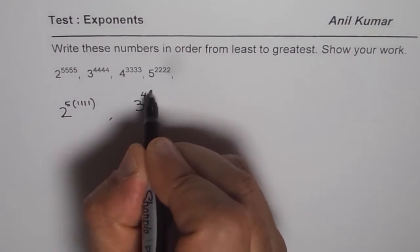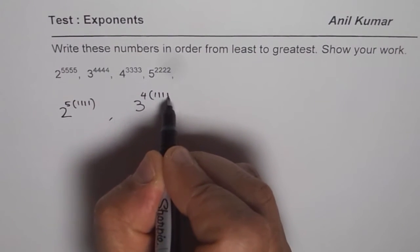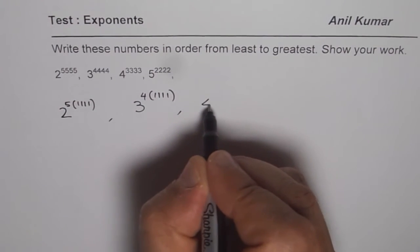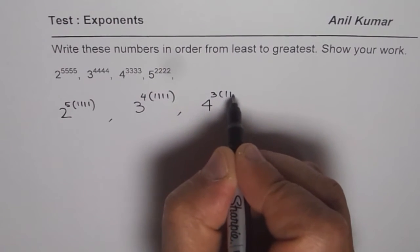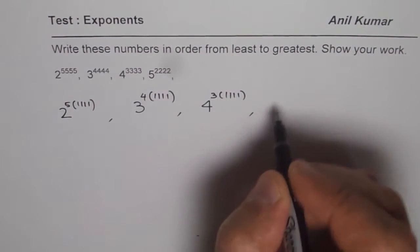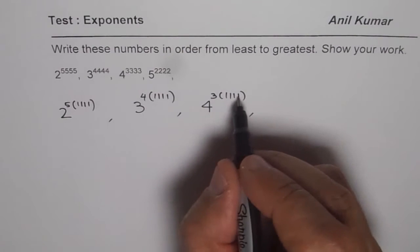Similarly, I could write this as 3, 4 common, 1111, correct? And I can write this as 4, 3 common, 1111. It is not like common, but 3 times this is that much, correct?